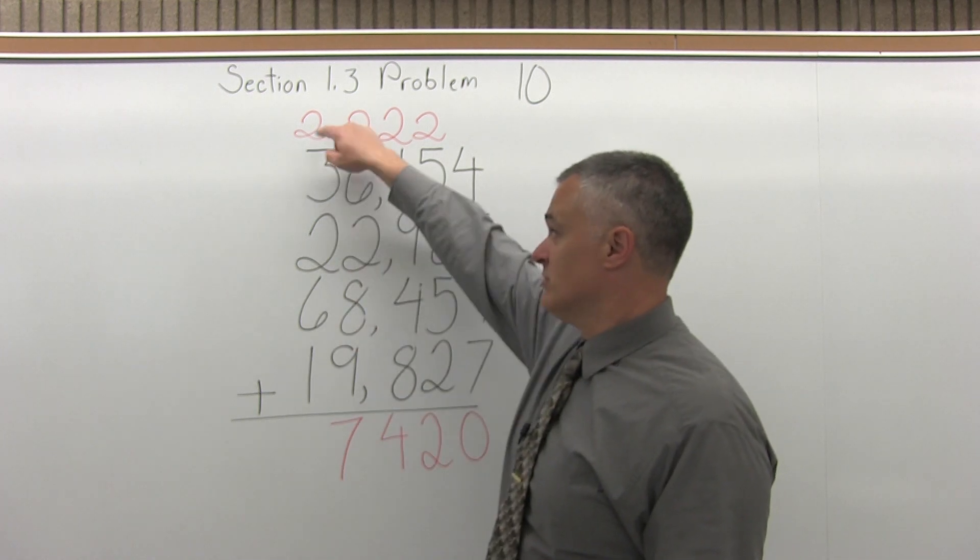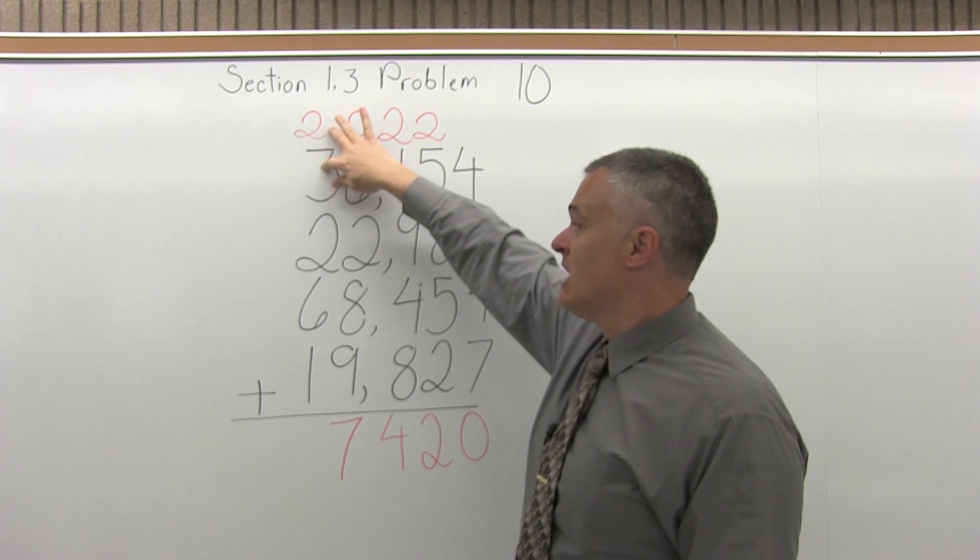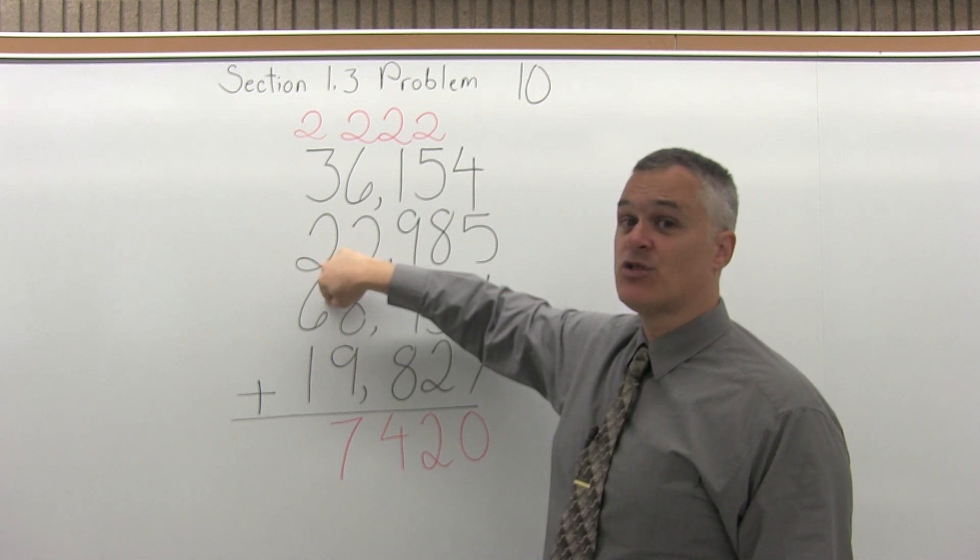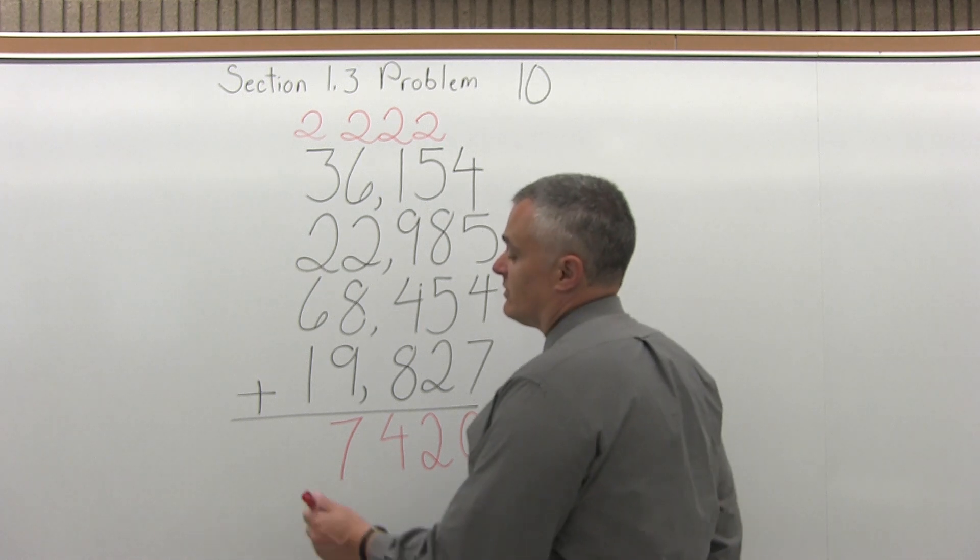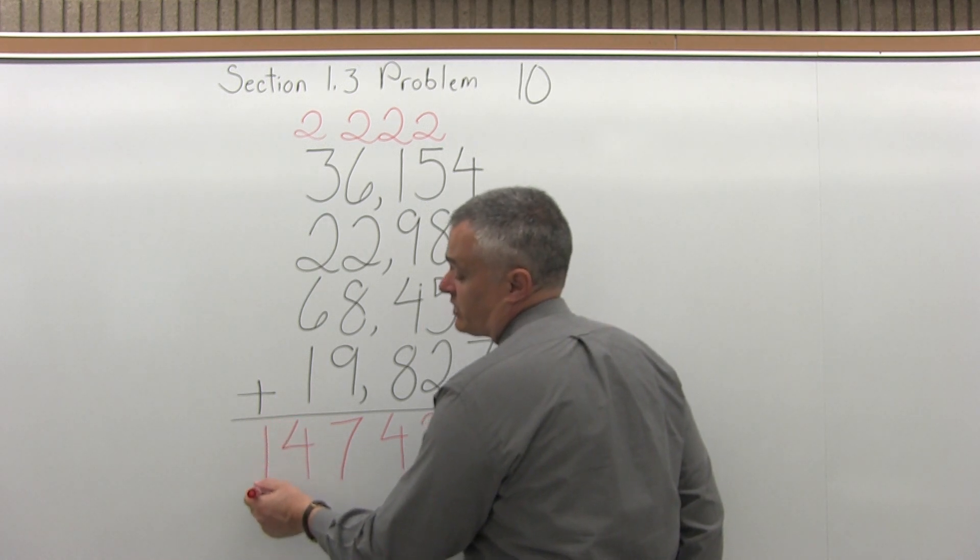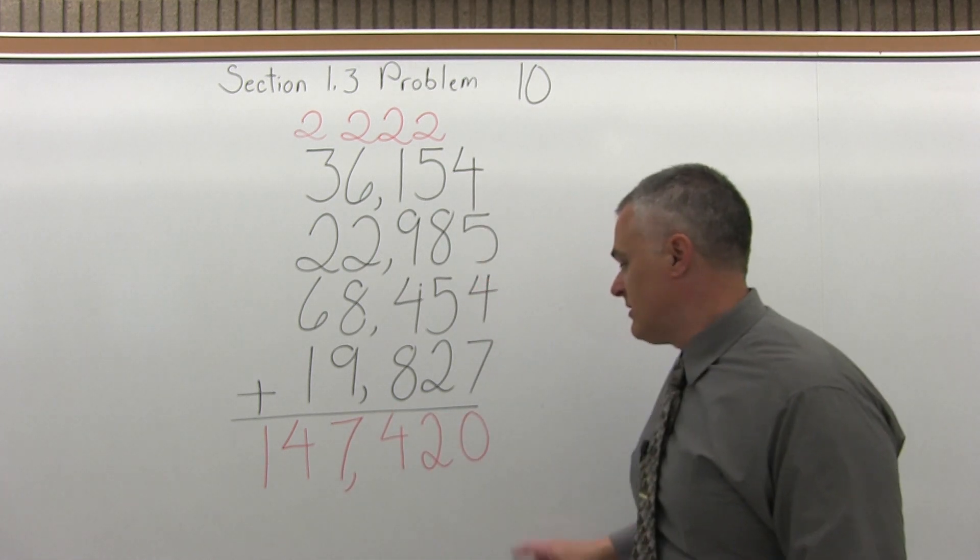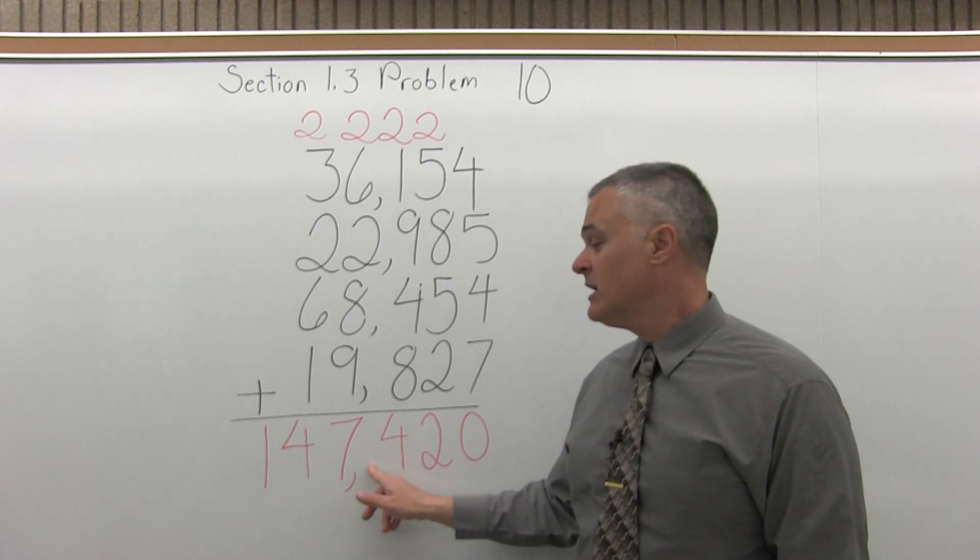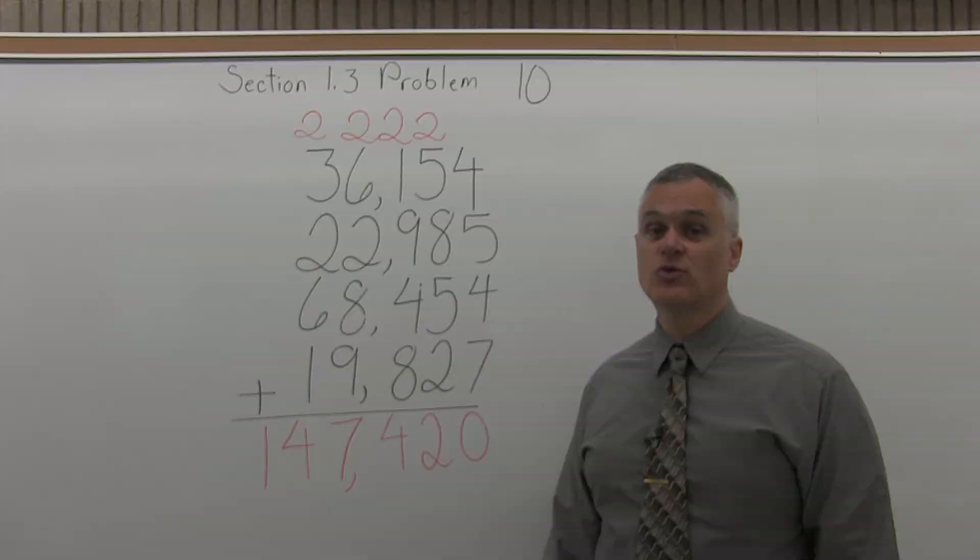And then I will add 2 plus 3 plus 2 plus 6 plus 1. 2 plus 3 is 5. 5 plus 2 more is 7. 7 plus 6 is 13. And then 13 plus 1 is 14. Now for the 14, there is no next column of digits. So I can just put the 14 the way it is. I like to put a comma between the 7 and the 4. Basically if you start from the right and go in 3 digits, you can put a comma. So the answer is 147,420.